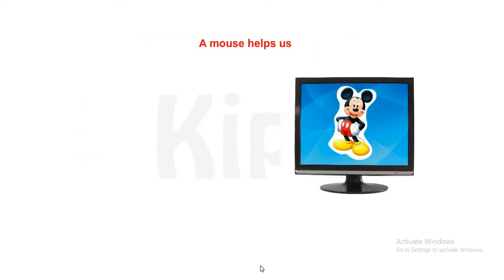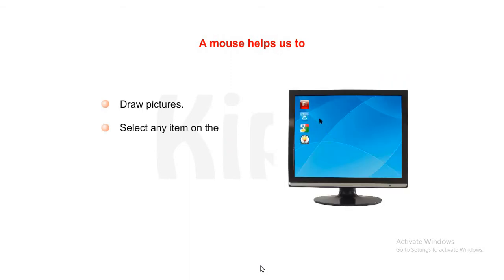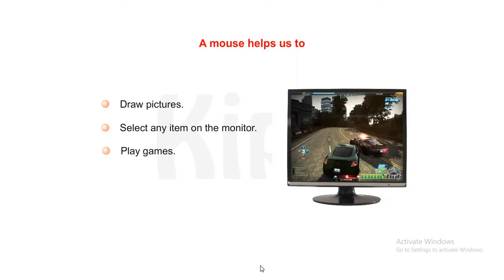A mouse helps us to draw pictures, select any item on the monitor, and play games. When we move the mouse, we can see a small arrow moving on the monitor. This arrow is called the mouse pointer.